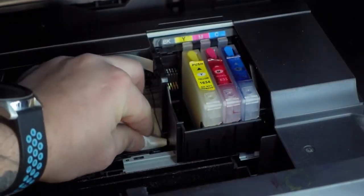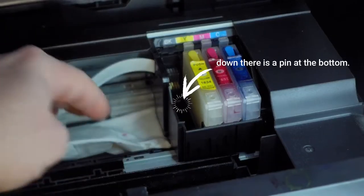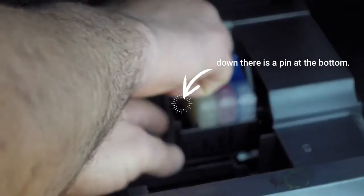Pull out the cartridge and down there is a pin at the bottom. You must add a napkin under your print heads to keep it from getting dirty.